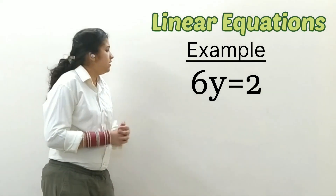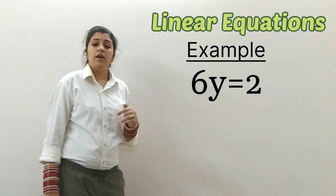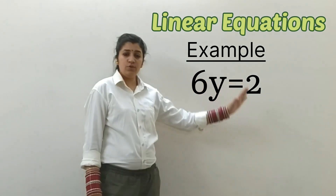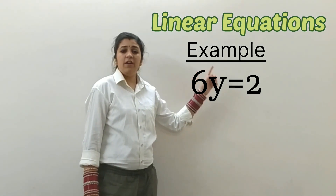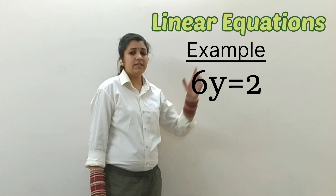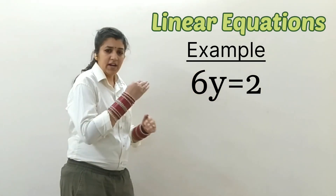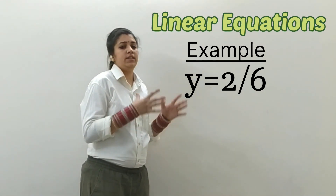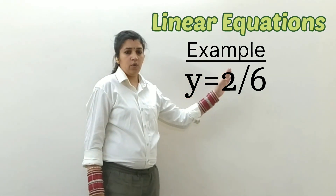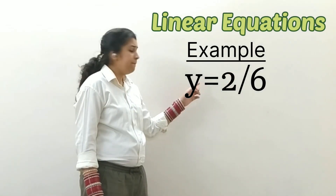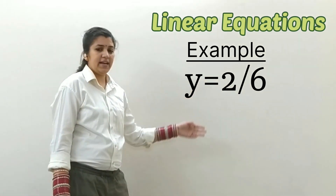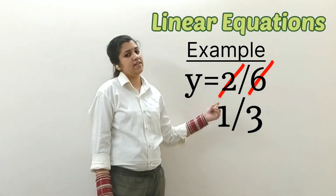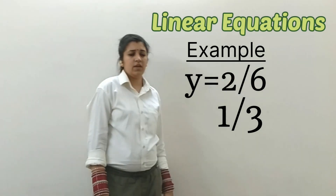Take another example: 6y is equals to 2. We have to calculate the value of y. The 6 is the multiple of y — it is in multiplication with y. When we transfer that number to another side, it goes into the division part. So 6 will go into the denominator of 2, and it will become y is equals to 2 upon 6. Now 2 upon 6 gets cancelled — that is 1 upon 3. So we get the value y is equals to 1 upon 3. In this way, we can solve linear equations in one variable.